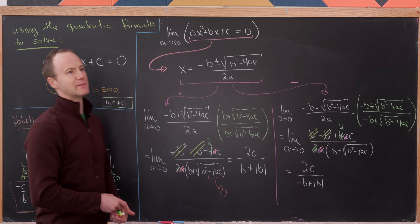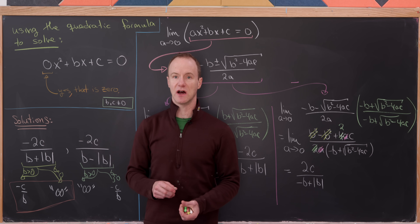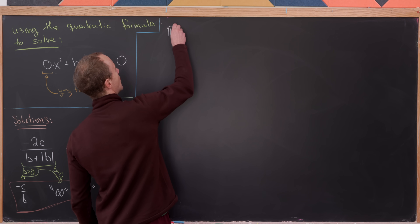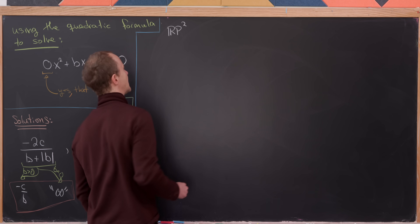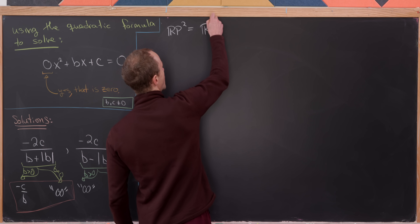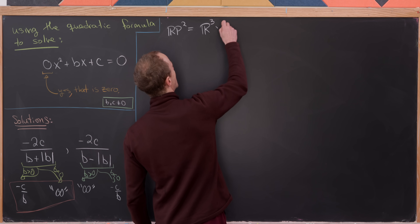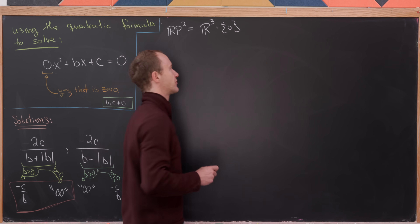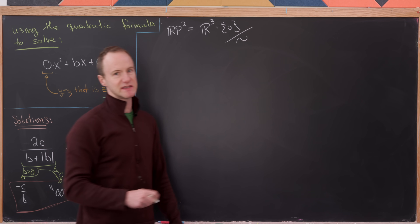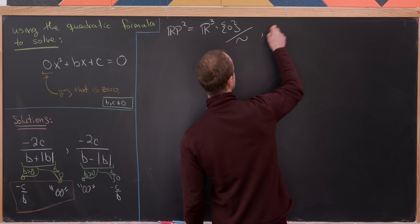Let's see if we can make sense of this using another branch of math called projective geometry. We need to consider the real projective plane, written as RP². It is the quotient of real three-space, excluding the origin, modulo an equivalence relation, meaning it's made up of equivalence classes.